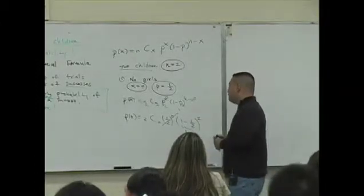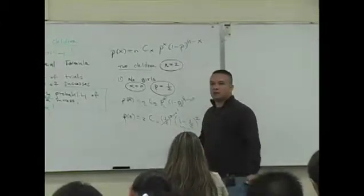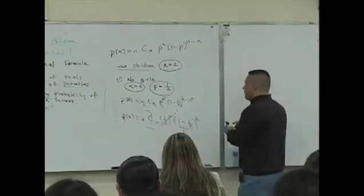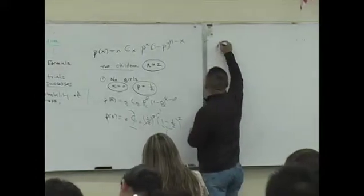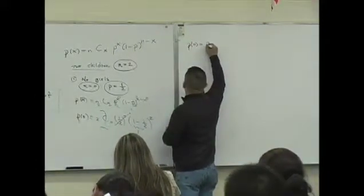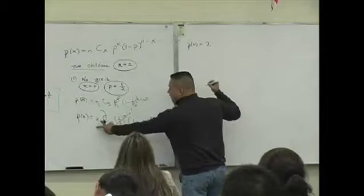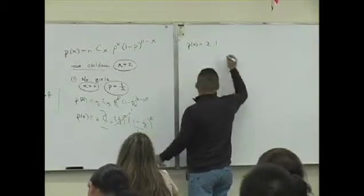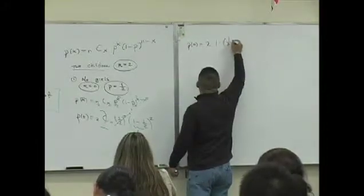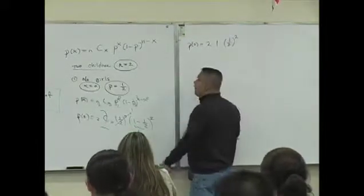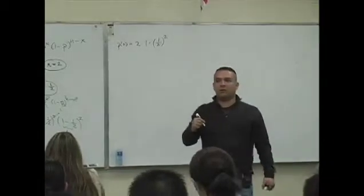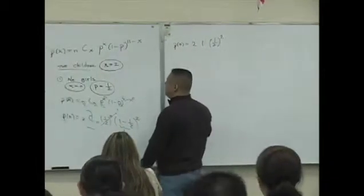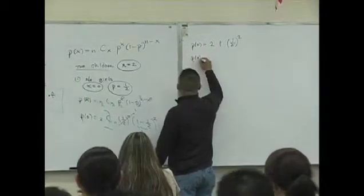You guys know what 2C0 is? It's 2. So P of 0 is 2 times 1 times 1/2 to the second power.